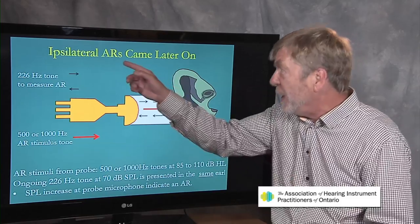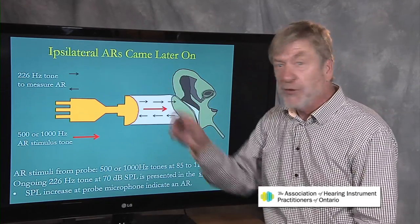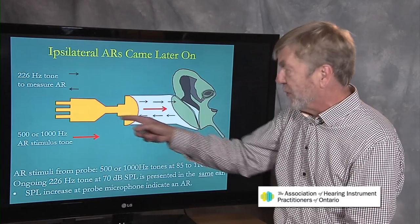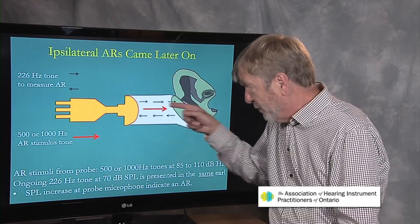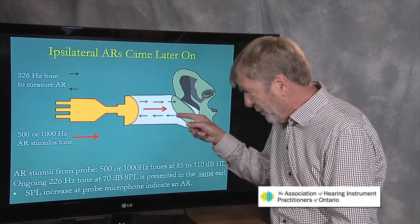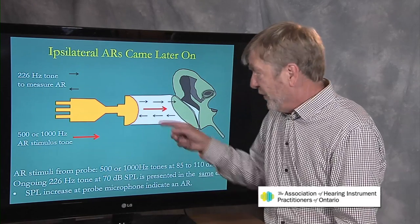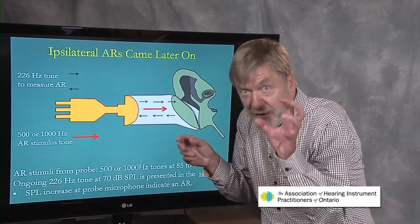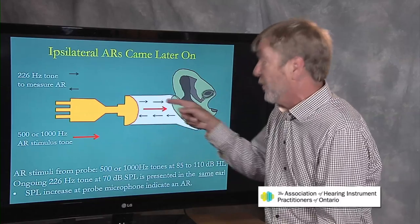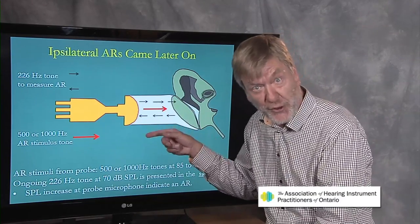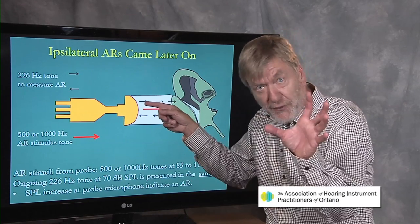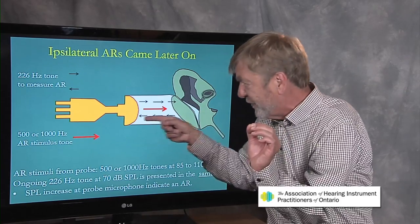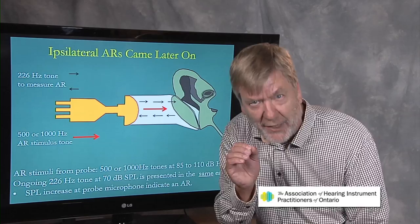Ipsilateral acoustic reflex testing also tests the acoustic reflex, but it's done in the same ear. The probe is stuck in the ear, emitting a constant low-pitched tone picked up by the mic with an airtight seal — just like tympanometry. But suddenly a loud sound, the stimulus, is put in that same ear. The response is a change — a sudden temporary increase in sound picked up by the mic for the split second the loud tone is emitted. That indicates an ipsilateral acoustic reflex.